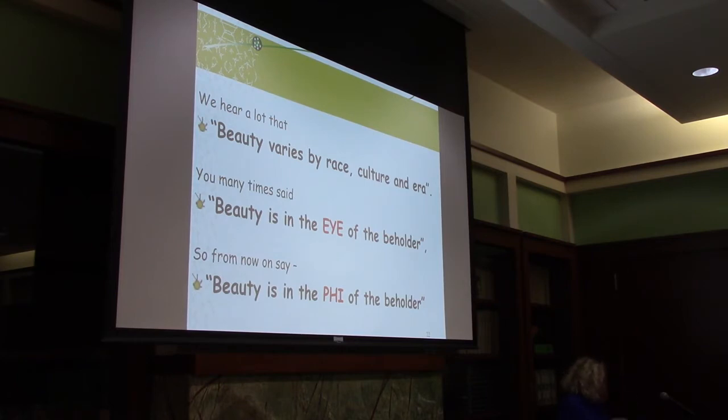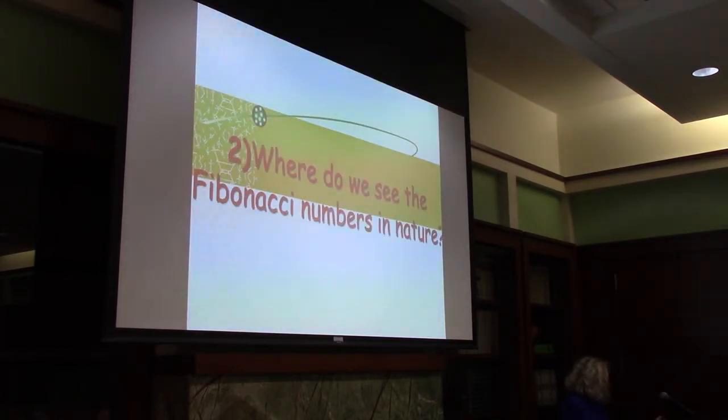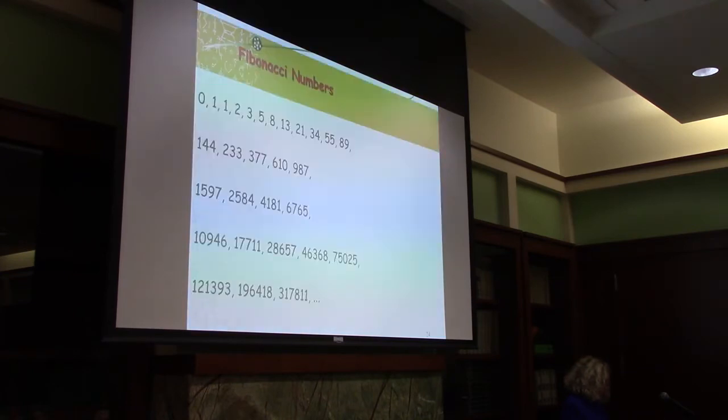You might understand why Renaissance artists called it the divine proportion, because it appears so often. You hear a lot that beauty varies by race, culture and era, and you say beauty is in the eye of the beholder. But from now on, you don't say it anymore. You say beauty is in the phi. I'm writing a book now with a journalist from the New York Times called Mathematics of Beauty. This is the slogan of the book.